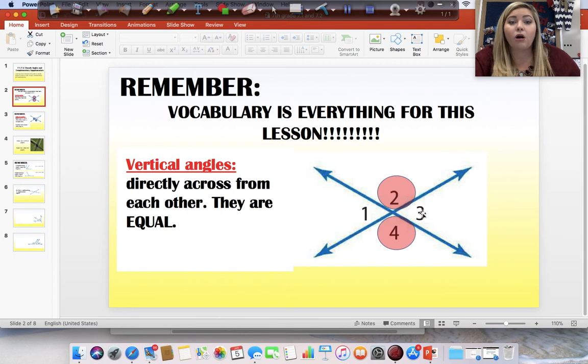So, one and three are also vertical angles. I just wanted to show you one example. I felt like if I did two different colors it would be a little confusing. But, two and four are vertical angles. One and three are vertical angles and they are equal to each other.